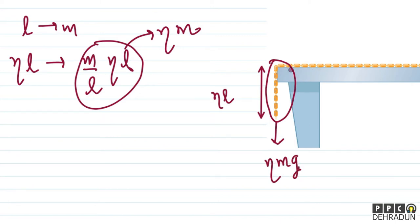लेकिन इसे कोई तो है जो रोक करके रख रहा है। तो हम लोग समझ पा रहे हैं कि actually यहाँ पर एक opposing force है - force of friction, जो इसे रोक करके रखा है। तो हम लोग यहाँ पर उस opposing force of friction को इस तरीके से दिखा सकते हैं।